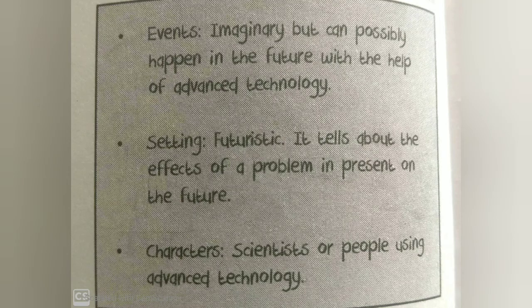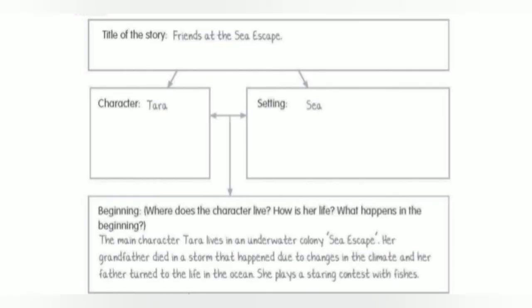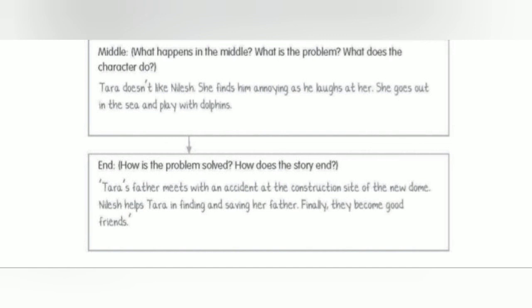Open your worksheet Volume 3 to page number 7. Question number 1: fill in the story map for "Friends at the Sea Escape." Put a star next to the details that are related to science. Title of the story: Friends at the Sea Escape. Character: Tara. Setting: Sea. Beginning — where does the character live and what is her life like? The main character Tara lives in an underwater colony called the Sea Escape. Her grandfather died in a storm that happened due to changes in the climate, and her father turned to life in the ocean. She plays a staring contest with fish.